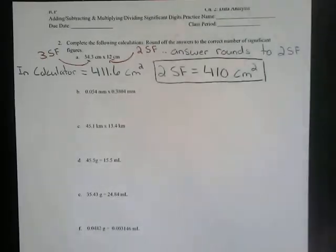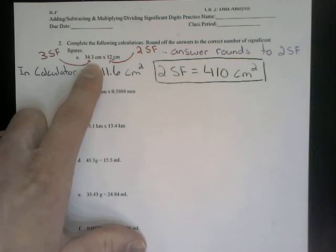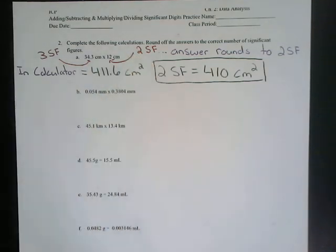Same process happens with our division. The only difference is you're dividing. And the easiest way to do this is throw this in your calculator, determine the number of significant figures, round to the least number of significant figures in your given numbers.